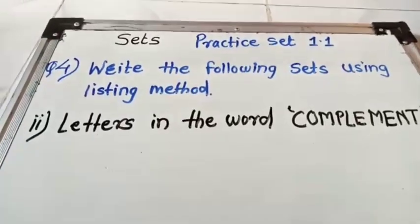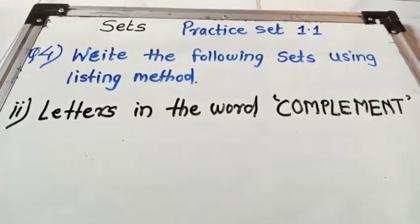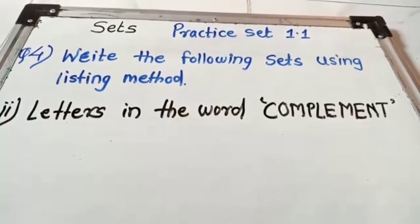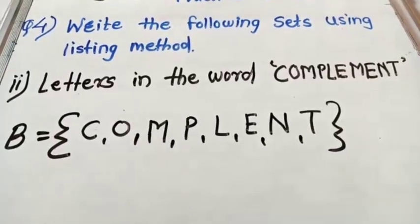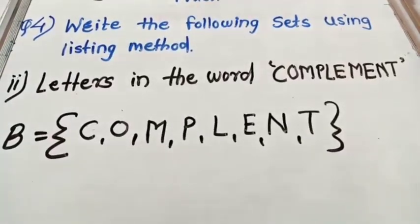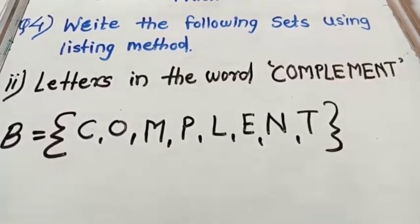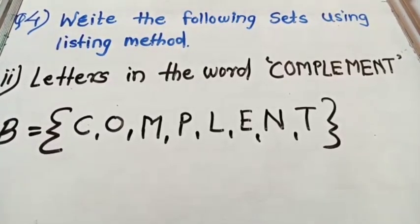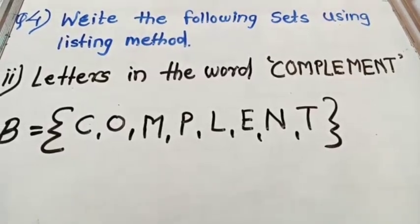Next example: letters in the word 'Compliment.' The answer is B = {C, O, M, P, L, I, E, N, T}. Note that M appears twice and E appears twice, so the set has 9 distinct elements — but since sets don't repeat, we write 9 unique letters and get 9 total.